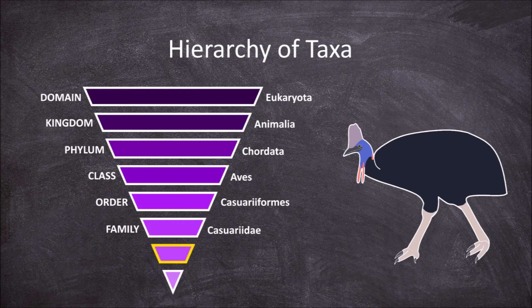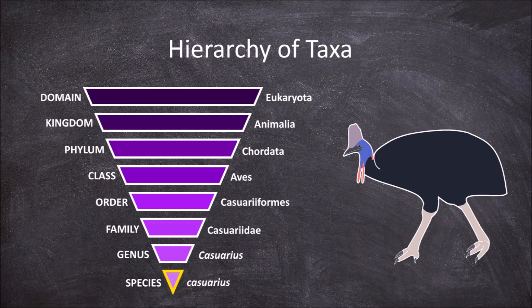Down from this is the genus level. The southern cassowary belongs to the genus Casuarius, along with the other species of cassowaries. The lowest level of taxon is the species taxon. The southern cassowary belongs to the species Casuarius, which refers to just the single species Casuarius casuarius, and all the members of the species.